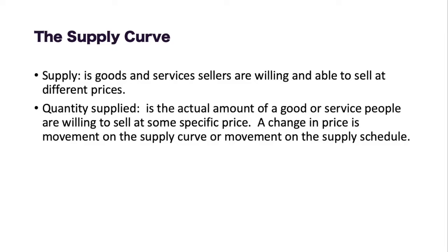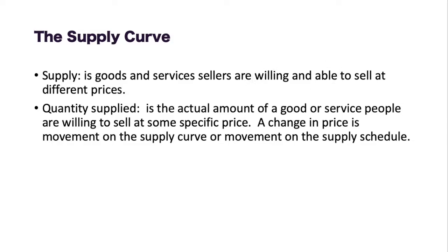Specifically today we're going to look at the supply curve. Supply is the goods and services sellers are willing and able to sell at different price levels. The important thing to understand is that it is both willing and able. Quantity supplied is the actual amount of goods or services people are willing to sell at some specific price.